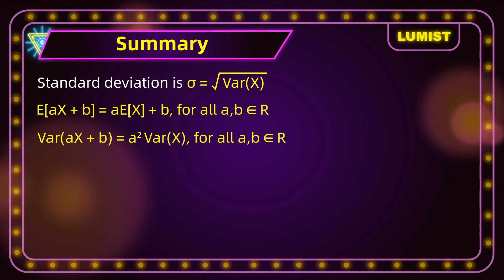After learning how to find expected value and variance for a discrete random variable, in our next video we will be talking about more complex situations — that is, expectation and variance of more than one random variable. See you guys in the next video.